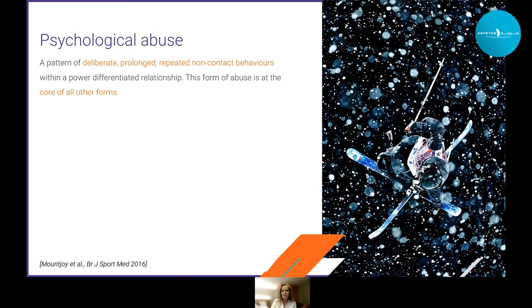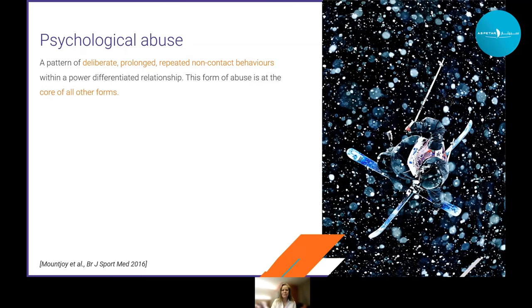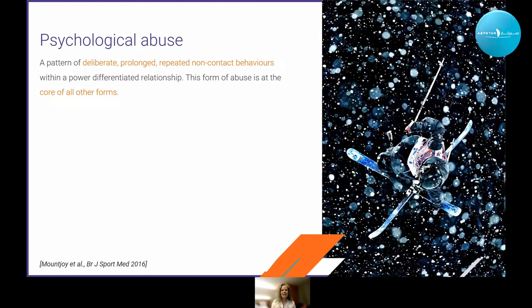The underpinning and most prevalent form is psychological abuse — not a one-off grumpy incident, but a pattern of deliberate, prolonged, repeated non-contact behaviors, usually within a power differential relationship: senior athlete over junior athlete, coach over athlete, physician over athlete. This form of abuse underpins and is the core for all other forms of abuse.